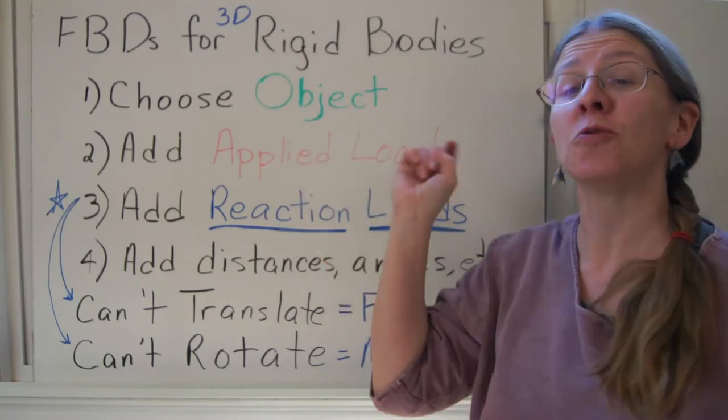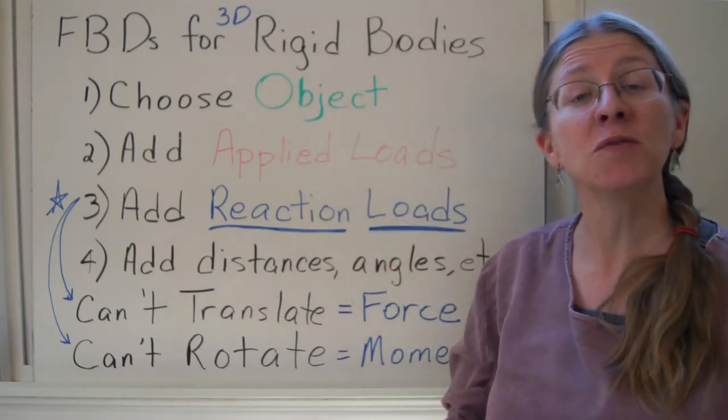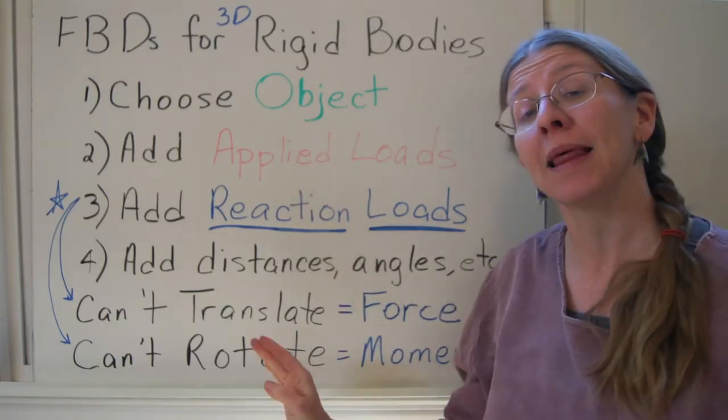Free body diagrams for three-dimensional rigid bodies are a lot like free body diagrams for two-dimensional rigid bodies. The steps are about the same.